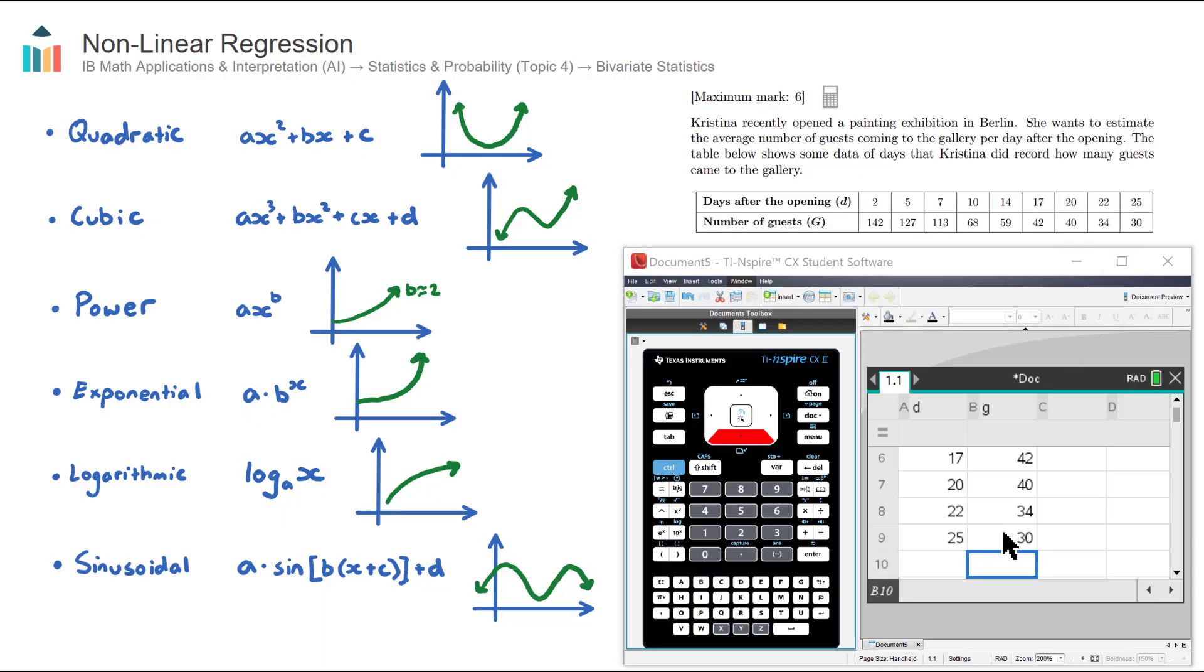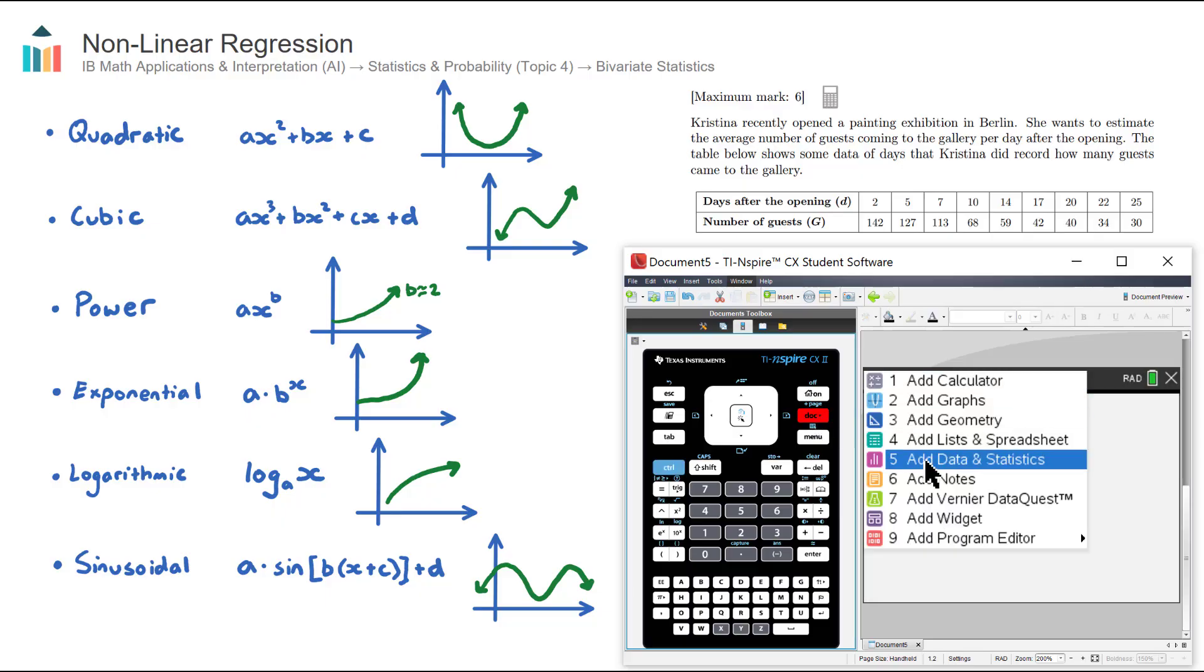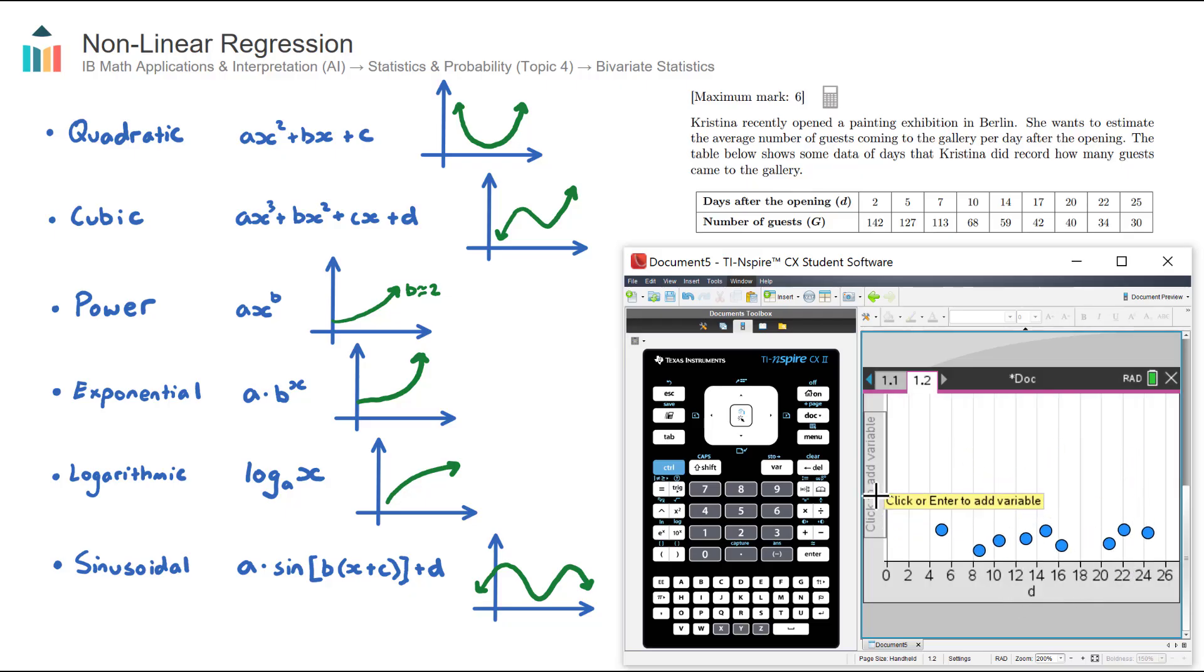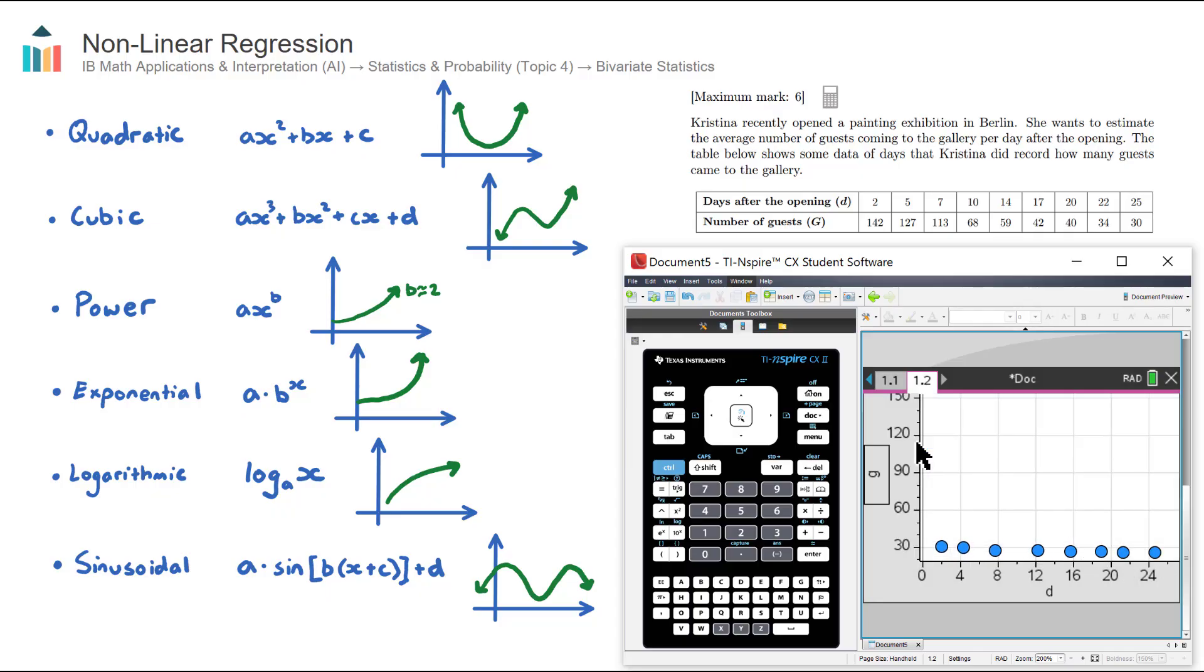The next step that I go through is to visualize the scatter plot of this data. The way to do that, we can go control new page or control doc, number five, add data and statistics. Let's assign the horizontal axis our independent variable D and our vertical axis our dependent variable G. And then we can see the curve.